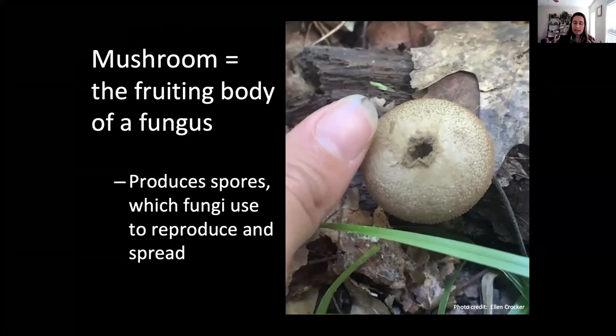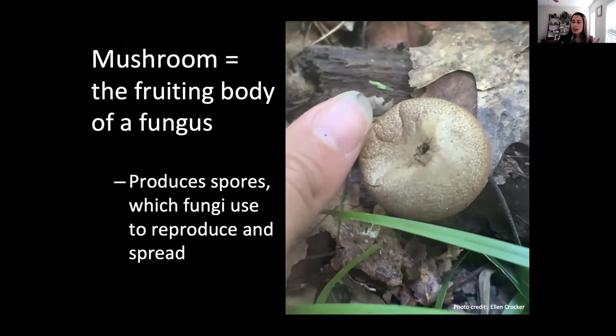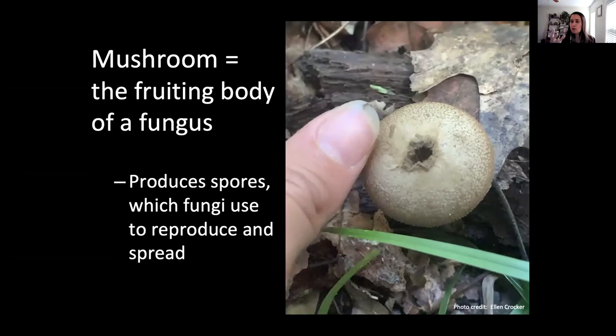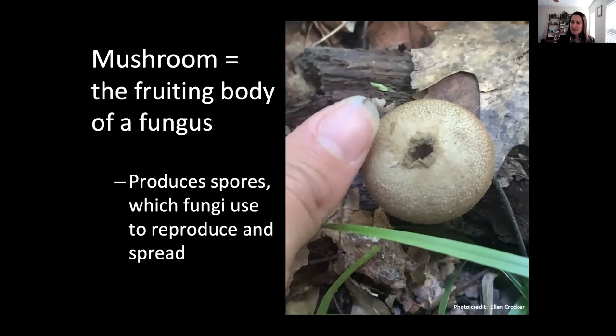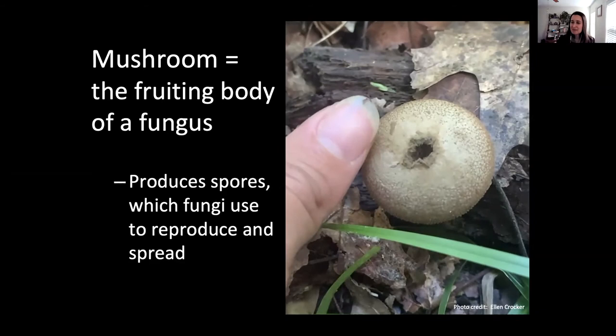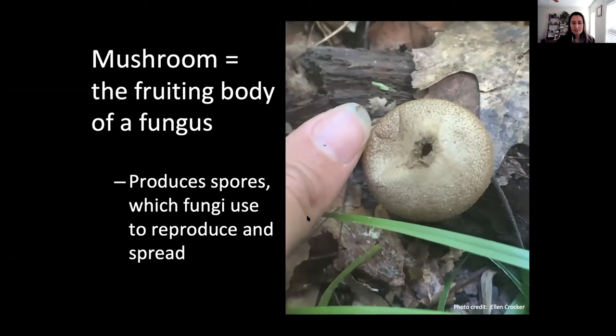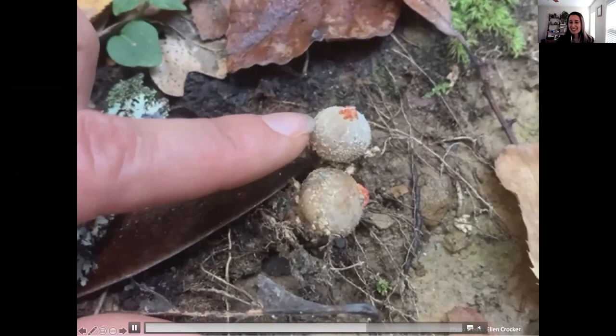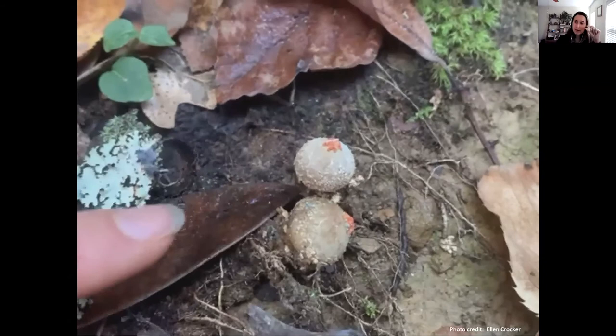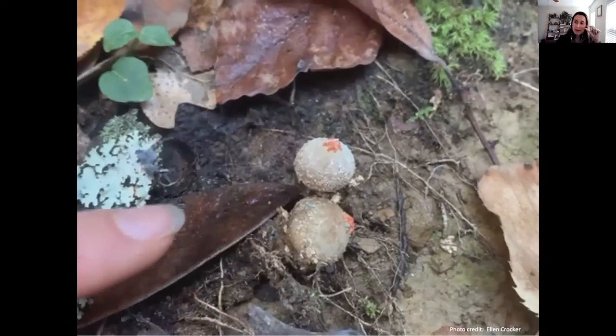An analogy would be an apple tree: the tree is the body of the organism, and occasionally it produces apples containing seeds. For fungi, the fungal body is hyphae or mycelium — a vegetative, filamentous, thread-like structure — and occasionally that will produce its fruiting bodies, the mushrooms. Those mushrooms produce spores that travel on air, water, and insects, germinating wherever they land to produce more fungi.